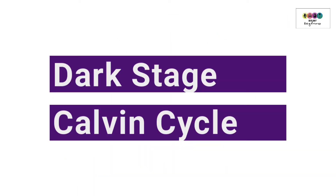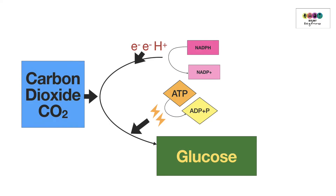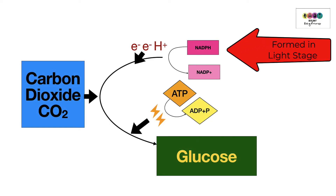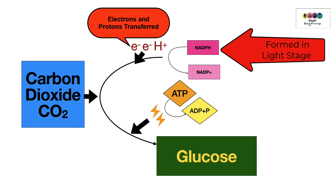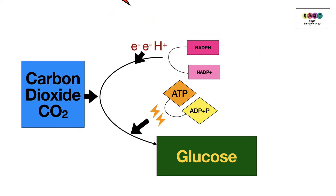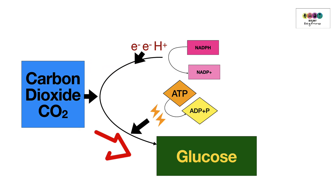The Calvin cycle is much more straightforward than the light stage. It all begins with NADPH, which was formed in the light stage when NADP+ trapped two high-energy electrons and a proton. NADPH then transfers those electrons and protons, which combine with carbon dioxide, and through a complex series of reactions, glucose is eventually formed.